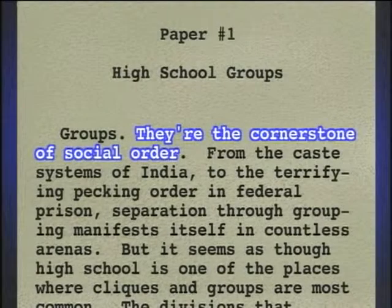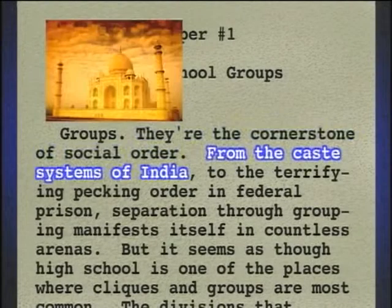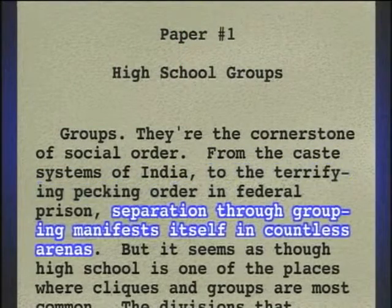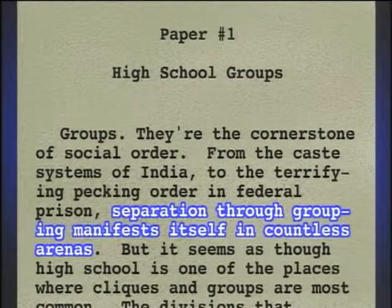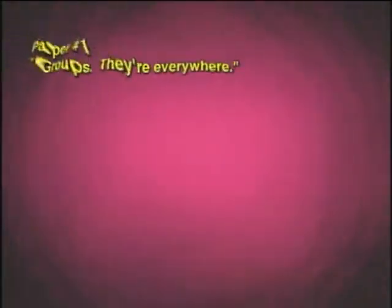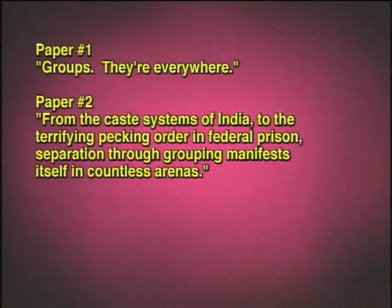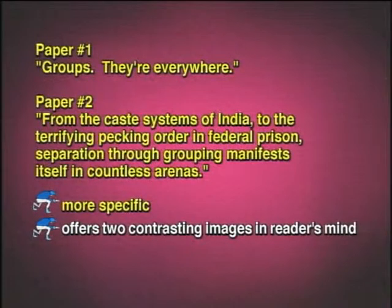Groups — they're the cornerstone of social order. From the caste systems of India to the terrifying pecking order in federal prison, separation through grouping manifests itself in countless arenas. Nathan will probably want to continue to refine his opening, but his new revision is more vivid. Instead of saying 'groups are everywhere,' he uses specific contrasting images — from the caste systems of India to the terrifying pecking order in federal prison — which says basically the same thing but is more specific and offers two contrasting images in the reader's mind.